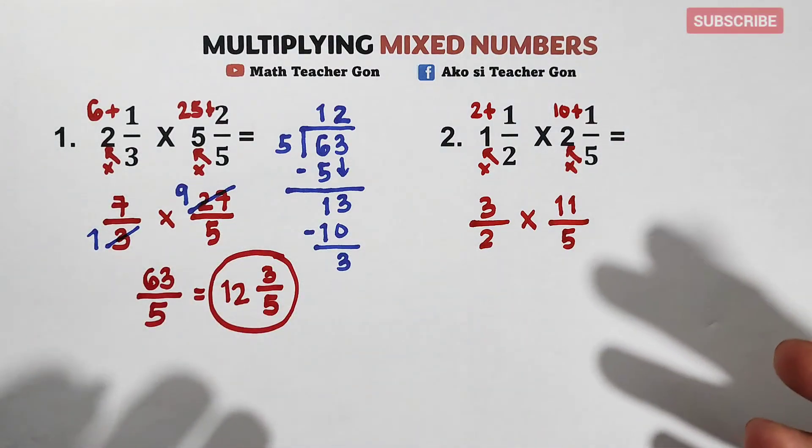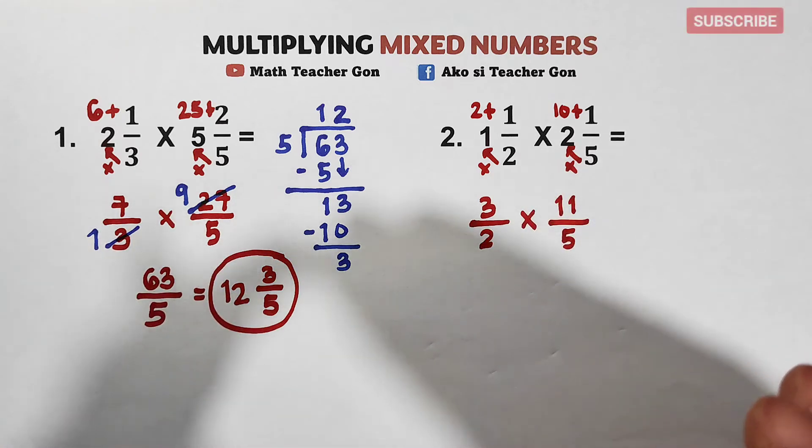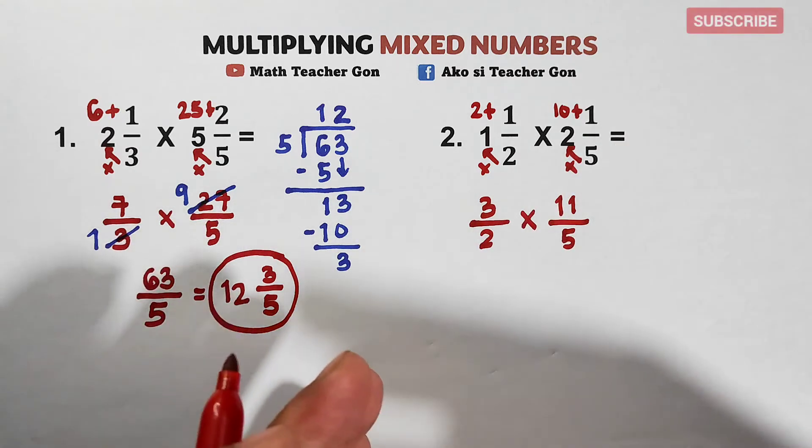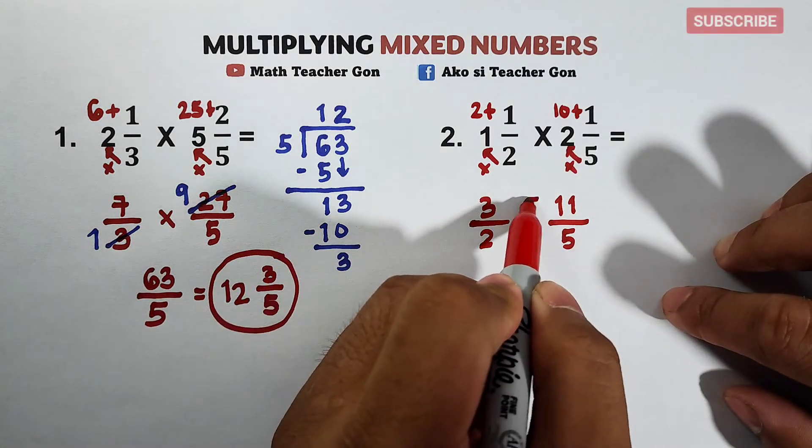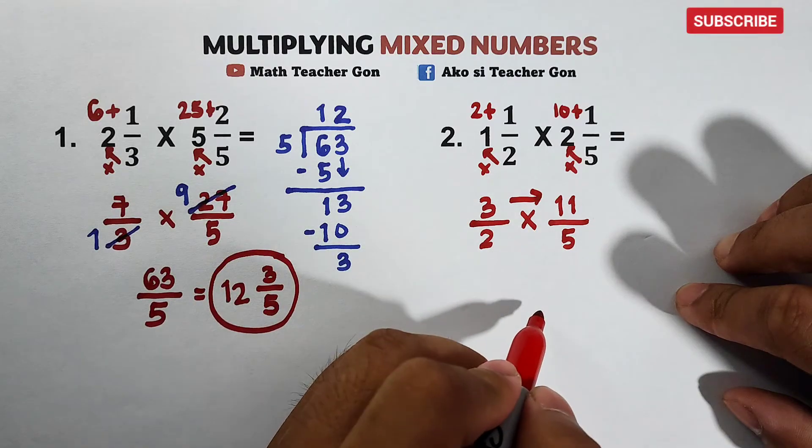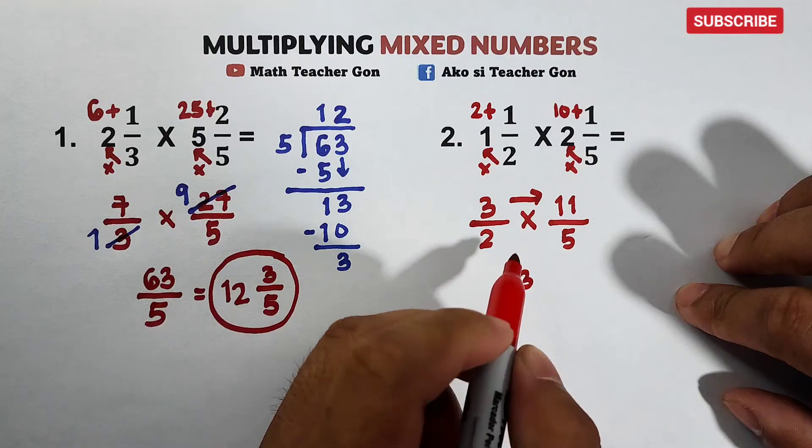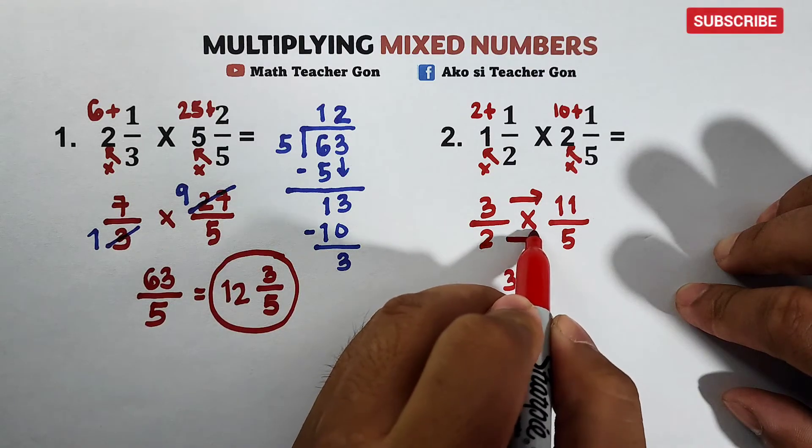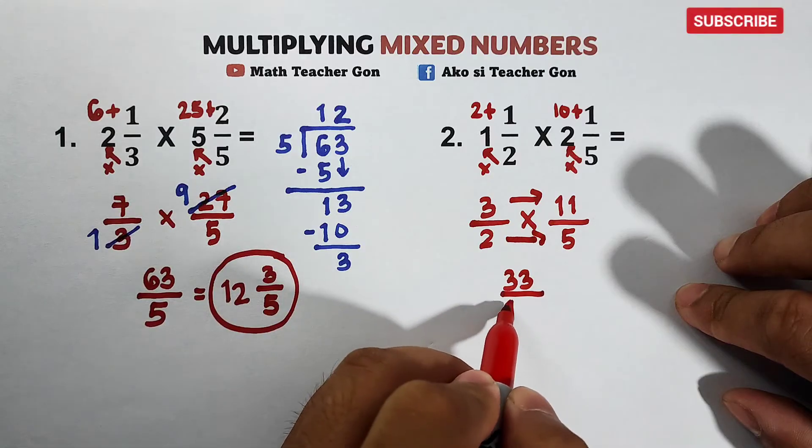So upon checking this improper fractions, we cannot cancel those numbers to make it simple or to make it smaller. Instead, we will multiply directly. So what we have is 3 times 11, we have here 33. Then the denominators, 2 times 5, that is equal to 10.